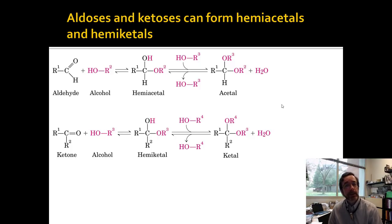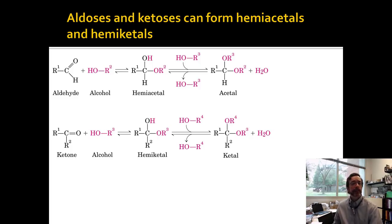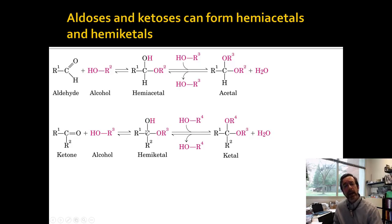Sugars have aldehydes or ketones on them, and there's one important reaction both can do — slightly different versions of the same reaction: they can react with alcohols to form covalent bonds. An aldehyde can react with an alcohol to form a hemiacetal. A hemiacetal can react with another alcohol to form a full acetal, forming a second covalent bond. This is really crucial because covalent bonds are how things hold together in biochemistry. Note that with the aldehyde you have an extra H that sticks around until the very end.